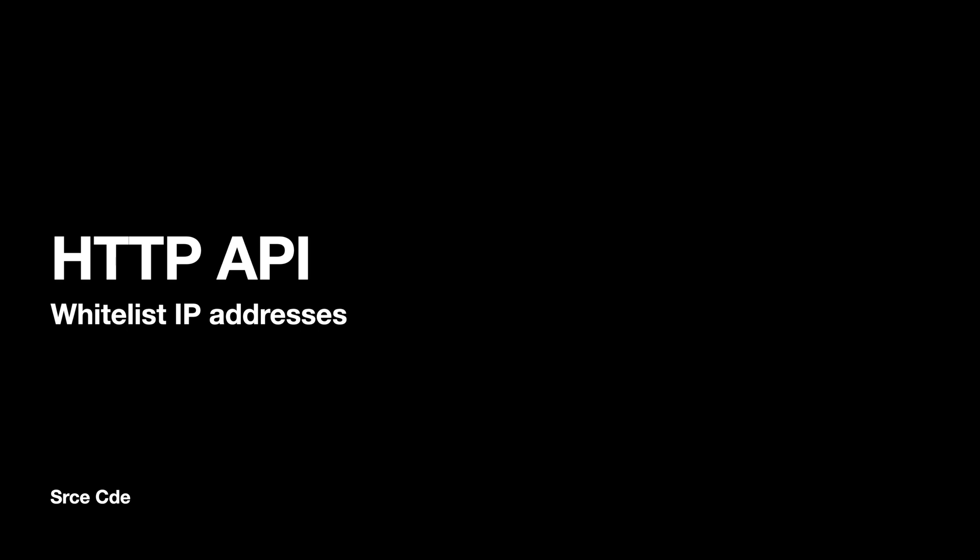What's up everyone, I'm Chirag and welcome to part 20 of the tutorial series on Amazon HTTP API. In this video I will take you through how to serve requests originating from specific IP addresses within HTTP API, and deny serving requests originating from IP addresses other than the ones which are whitelisted.